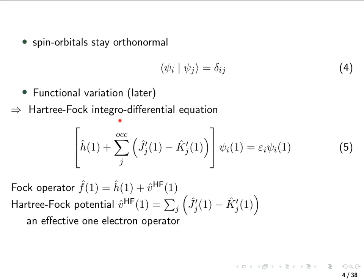The Hartree-Fock equations are called integral-differential equations, because in the first place it is a differential equation — the core Hamiltonian H contains the kinetic energy operator, which in quantum mechanics is the Laplacian operator, a sum of second partial derivatives with respect to x, y, z coordinates of the electron. And it's called an integral-differential equation because of the operators J' and K' discussed on the following slides, which in reality include an integral.